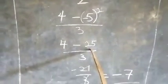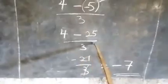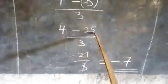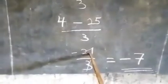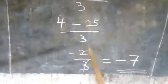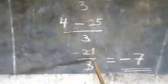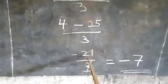So that is why we have 4 minus 25 all over 3. So 4 minus 25 gives minus 21. We have not ordinary 21 but minus 21. 4 minus 25 is equal to minus 21 all over 3.